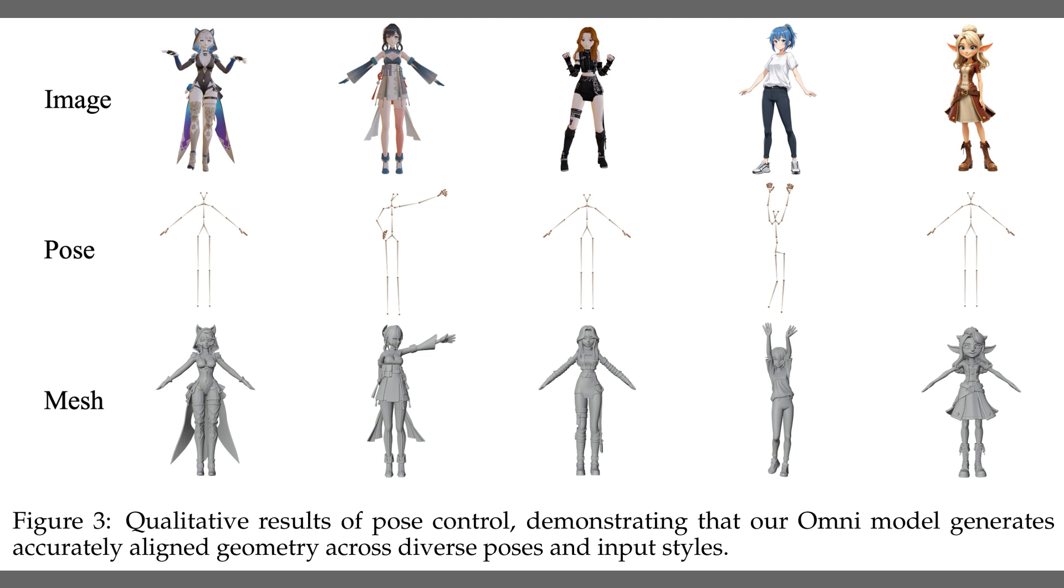The top row shows input images, the middle row shows the guiding skeletons, and the bottom row shows the resulting meshes. The meshes preserve clothing and proportions while aligning to poses: hands up and tilted arm poses.